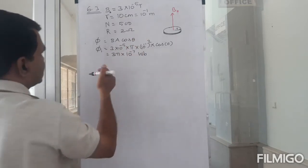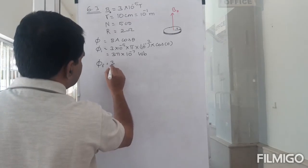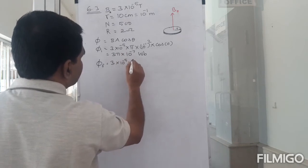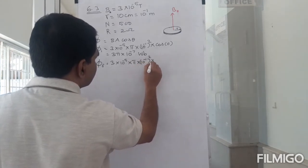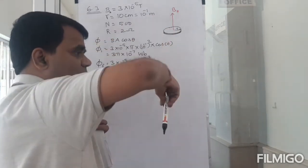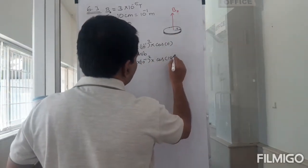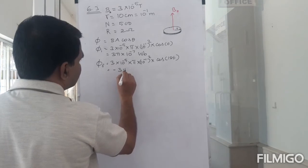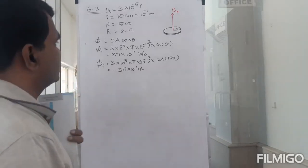As the coil turns 180 degrees, the final flux is Φ_final = B × π × (10⁻¹)² × cos 180° = 3 × 10⁻⁵ × π × 10⁻² × (−1) = −3π × 10⁻⁷ weber.